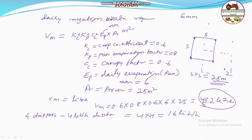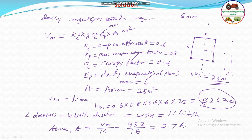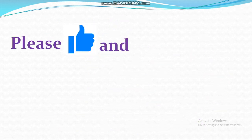The required water is 43.2 liters, and the system delivers 16 liters per hour. Therefore, the time of operation T = Vm / total discharge = 43.2 / 16 = 2.7 hours. So the answer is option A: 2.7 hours. Hope you understood this question — please like and subscribe to my channel.